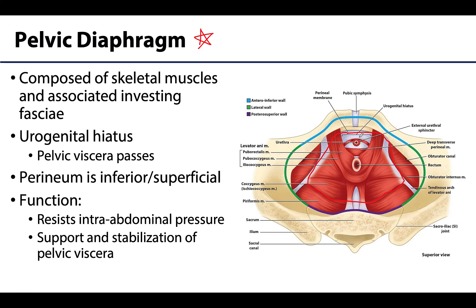There is a medial hiatus of the pelvic diaphragm that allows pelvic viscera such as the urethra, anus, and vagina to pass toward the perineum. This area is often referred to as the urogenital hiatus, but you may also hear the term levator hiatus — both indicate the area that allows viscera to traverse.